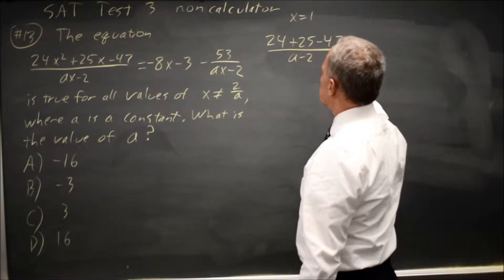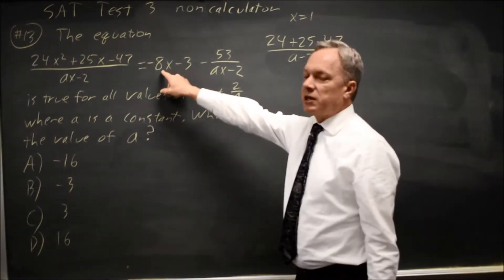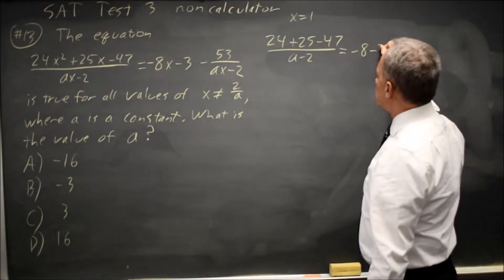over A minus 2, equals negative 8 times 1 is negative 8, minus 3,